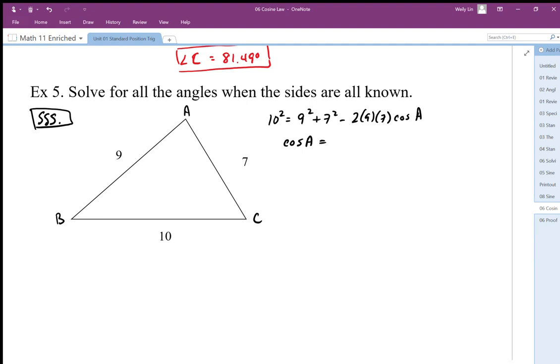Divided by negative 2 times 9 times 7, and I end up with positive 0.238.